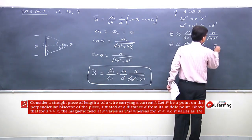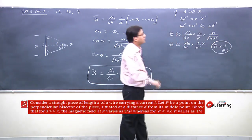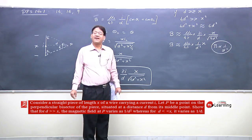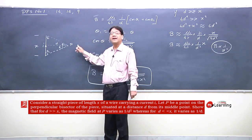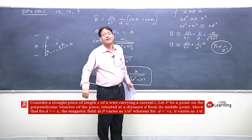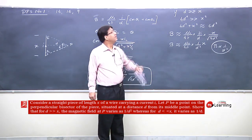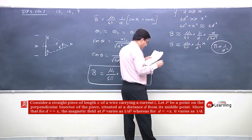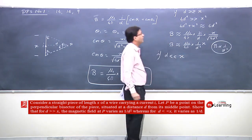B is directly proportional to 1/D². X is a wire of finite length — the further point P is from the wire, B is proportional to 1/D². This applies when D is very very large as compared to X. Now the second situation: if D is very very small as compared to X.